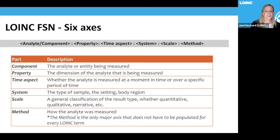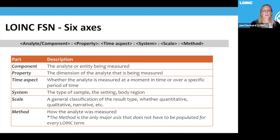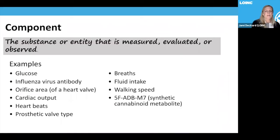The fourth axis is the system — the sample tested, the setting, or the body region. The fifth axis is the scale, which is a general classification of the result type: quantitative, qualitative, narrative, etc. The sixth axis is the method — how the analyte was measured — and this is the only major axis that does not have to be populated for every LOINC term. Some terms will only have component, property, time, system, and scale populated, with method as null; that is intentional.